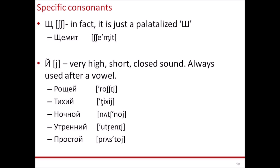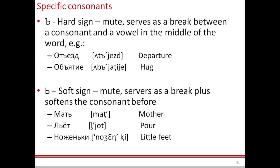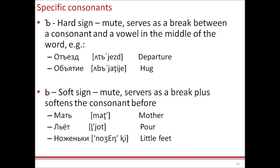Another specific consonant is Й. In English, we have a similar sound in the word 'yellow.' Almost always, the sound is used after a vowel: РОЩЕЙ, ТИХИЙ, НОЧНОЙ, УТРЕННИЙ, ПРОСТОЙ. We also have two mute consonants: the Hard Sign, which serves as a break between a consonant and a vowel in the middle of a word, like in ОТЪЕЗД or ОБЪЯТЬЕ; and the Soft Sign, which serves as a break plus softens the consonant before it — МАТЬ, ЛЬЁТ, НОЖЕНЬКИ.